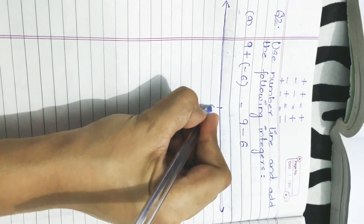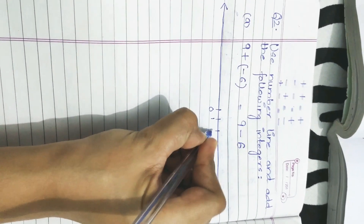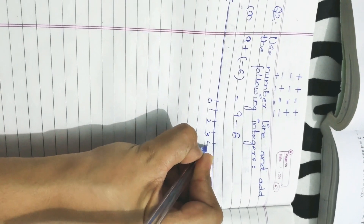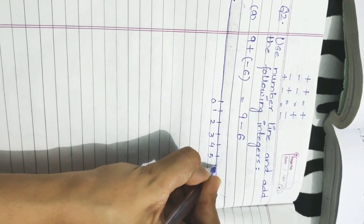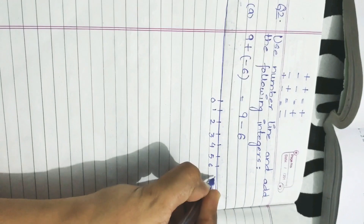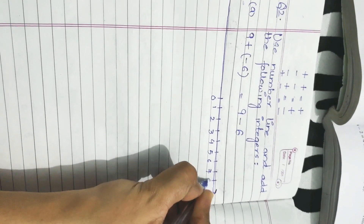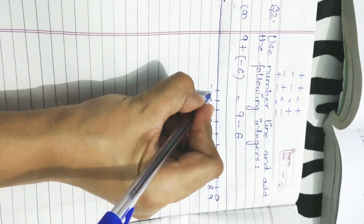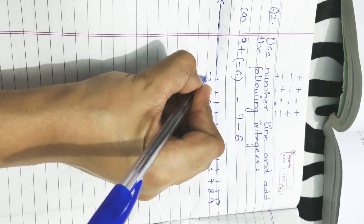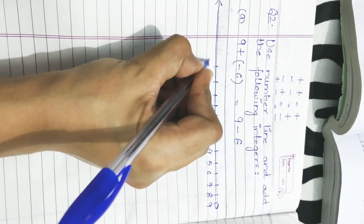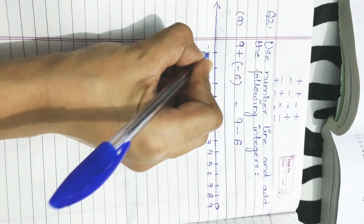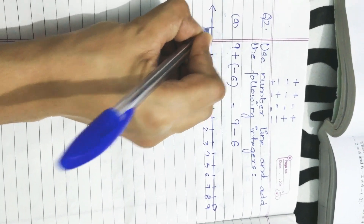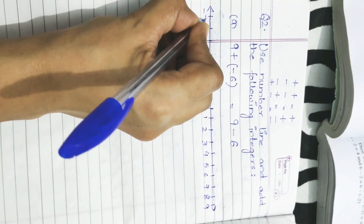Drawing the number line: 0, 1, 2, 3, 4, 5, 6, 7, 8, 9, minus 1, minus 2, minus 3, minus 4, minus 5, minus 6, minus 7.